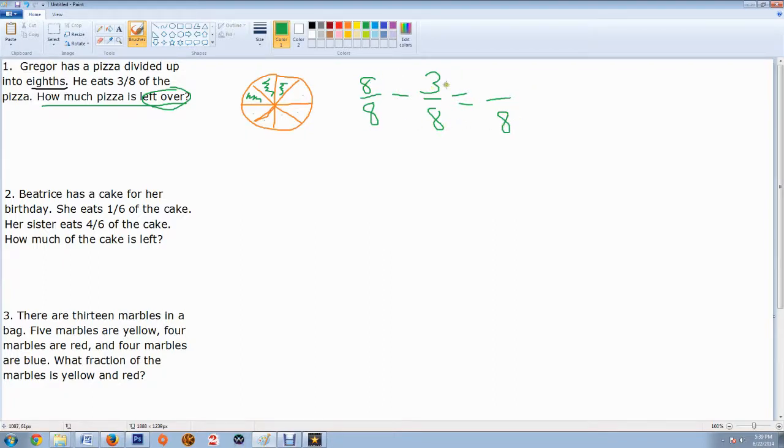And then we just subtract across the top. So eight minus three is five. So we know that there is five-eighths of the pizza right there. Five-eighths of the pizza left over. Pretty simple.